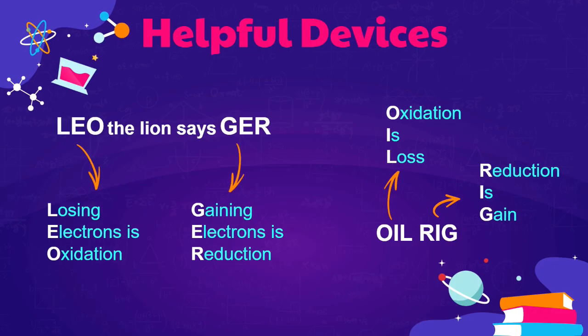What we learned in the last segment can be summarized by remembering these helpful mnemonic devices. The phrase, Leo the lion says ger, has the word Leo, which can be used to remember that losing electrons is oxidation, and the word ger, which can be used to recall that gaining electrons is reduction. Alternatively, some students like to use oil rig. Oil stands for oxidation is loss, and the word rig stands for reduction is gain.